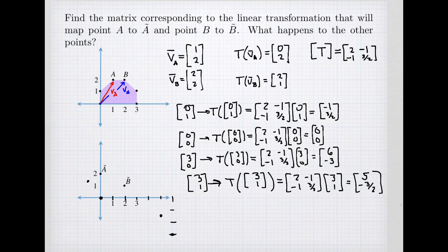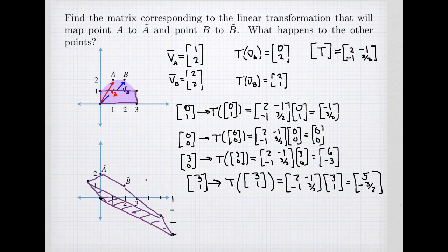Let's see what this transformed image looks like, drawn in purple to match the original. The original rectangle got turned into a parallelogram, and the little trapezoid on top got turned into another trapezoid. The shape has been squashed and stretched in two different directions. That is how we can use two vectors of a basis to figure out the entire linear transformation.